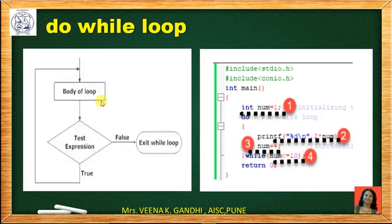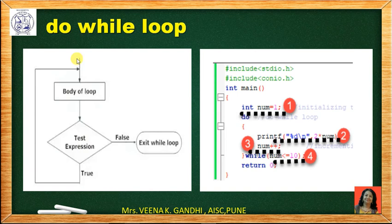Let's see the flowchart in more detail. In the flowchart, you can see that the body of the loop is first executed, and at the bottom you test the expression. If it is true, then again the body will be executed. If it is false, then the loop will be terminated.